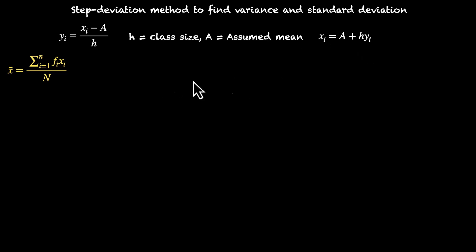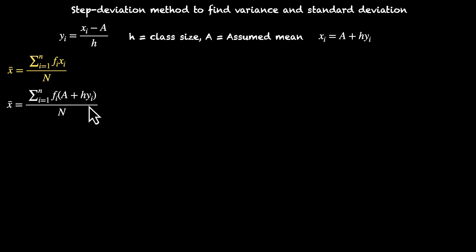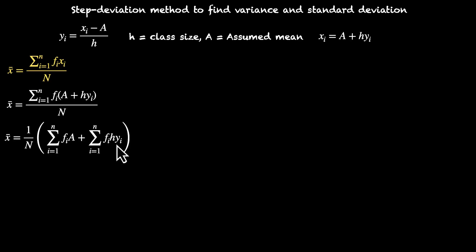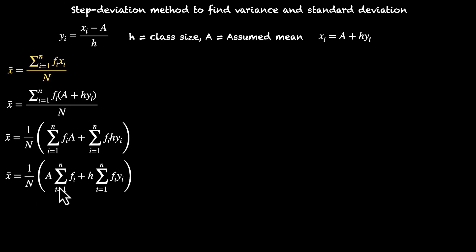If we replace xi by a + h·yi, we have mean = Σ fi·(a + h·yi) / n. Now we can multiply the frequency with a and h·yi and then take the summation of both terms. We have (1/n)[Σ(fi·a) + Σ(fi·h·yi)]. Now things that are constant for the data can be taken out of the summation sign. The assumed mean a remains the same for all values, and h is the class size, so that also comes out.